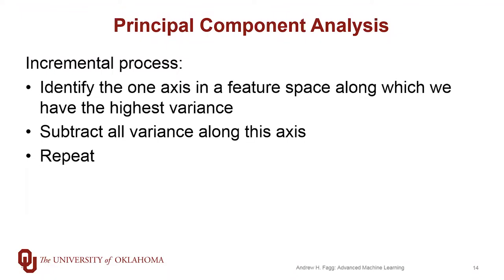So once we've identified this axis, then what we can do is essentially subtract out the variance of the data along that axis, and then that gives us a distribution of points in n-1 dimensional space, and then we can repeat this process.